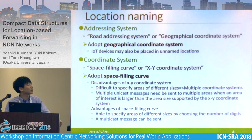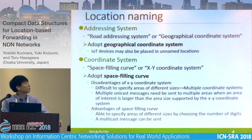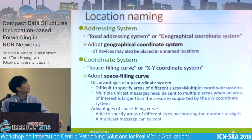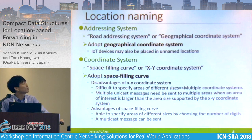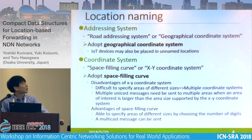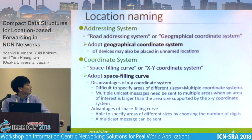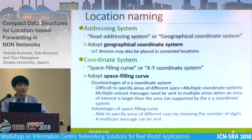First, I'll explain how to design a name of location data. We can choose a road addressing system or a geographical coordinate system, and we adopt a geographical coordinate system. Then, for the coordinate system, we can choose a space-filling curve or an XY coordinate system, and we adopt a space-filling curve. I picked up a disadvantage of the XY coordinate system and an advantage of the space-filling curve.